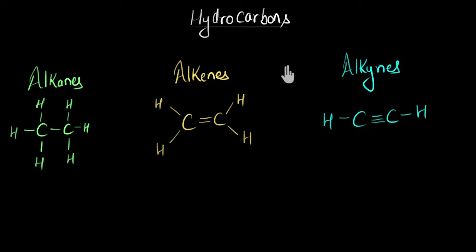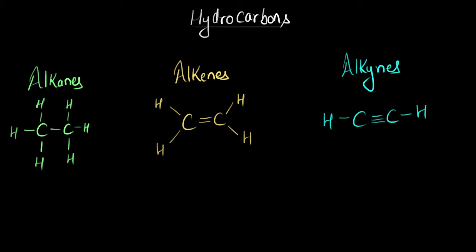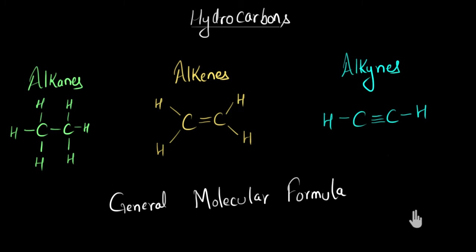We have been talking a lot about hydrocarbons — basically compounds made up of only hydrogen and carbon atoms. We saw that there are three main families: alkanes, alkenes, and alkynes. There are other families, but we'll talk about them in a separate video. Over here, we are going to look at more members of each of these families, and with the help of that, we will be arriving at a general molecular formula for each of these families.